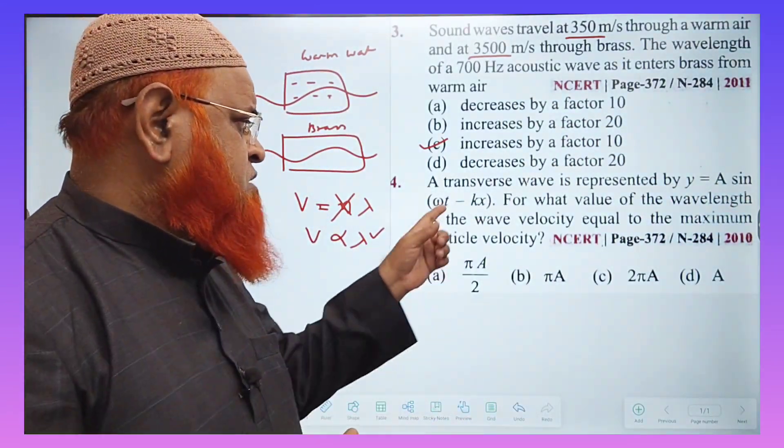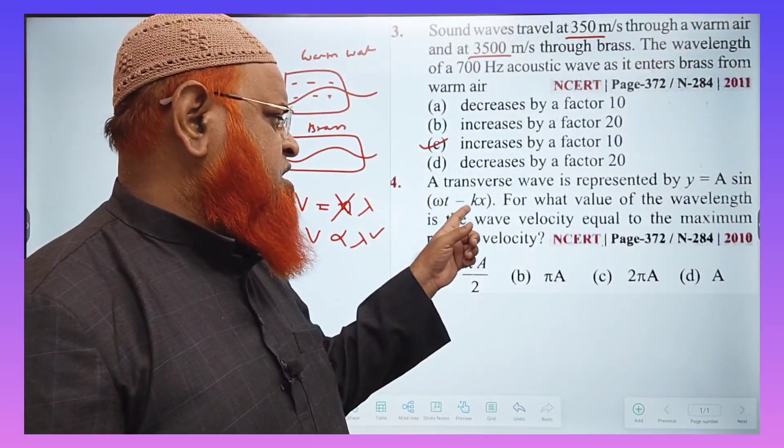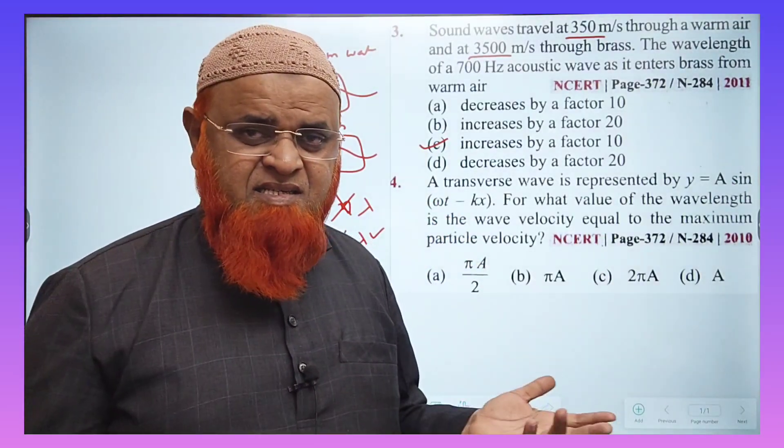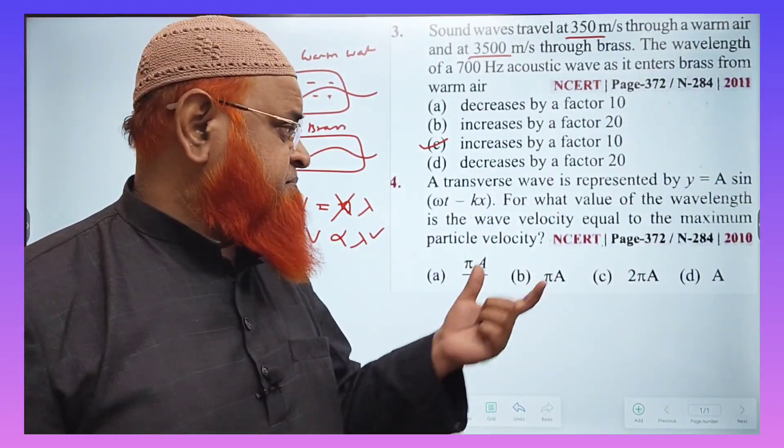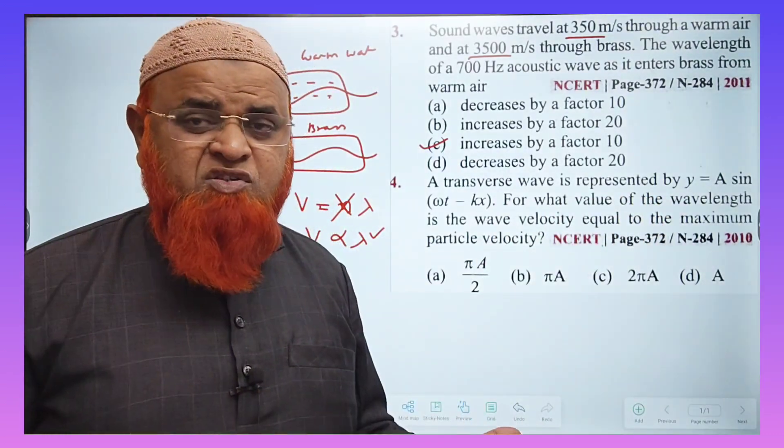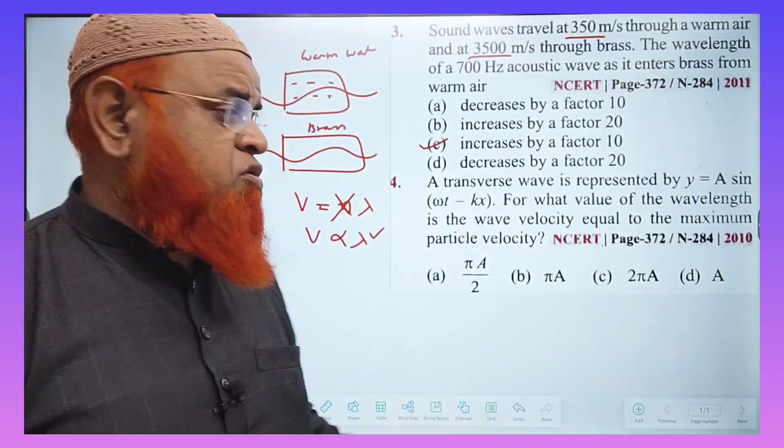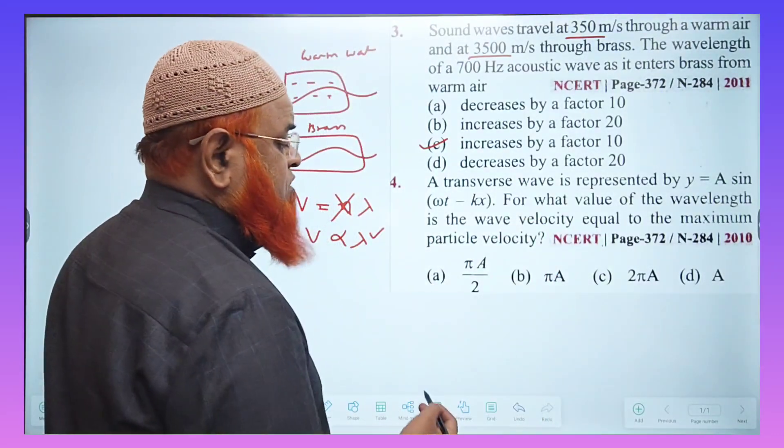This is a shortcut method here. So if you observe the second question, it is given that Y is equal to A sin omega t minus kx. Now he is telling in the question that wave velocity equals maximum particle velocity.